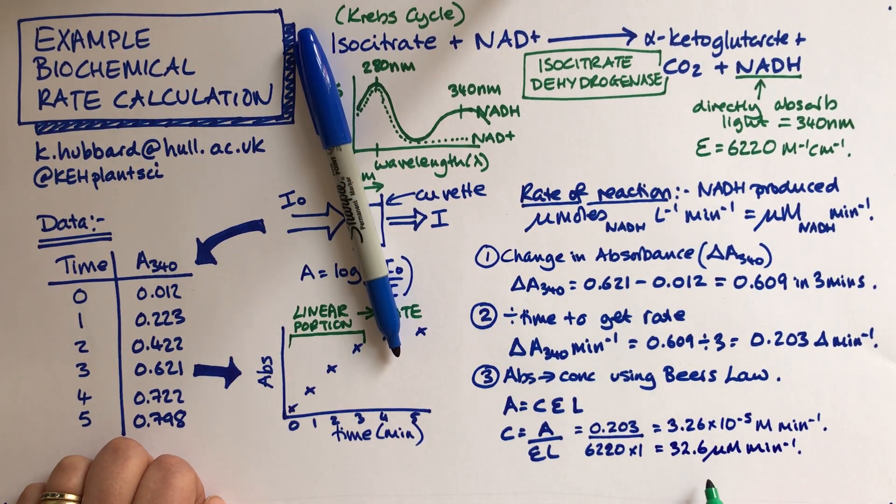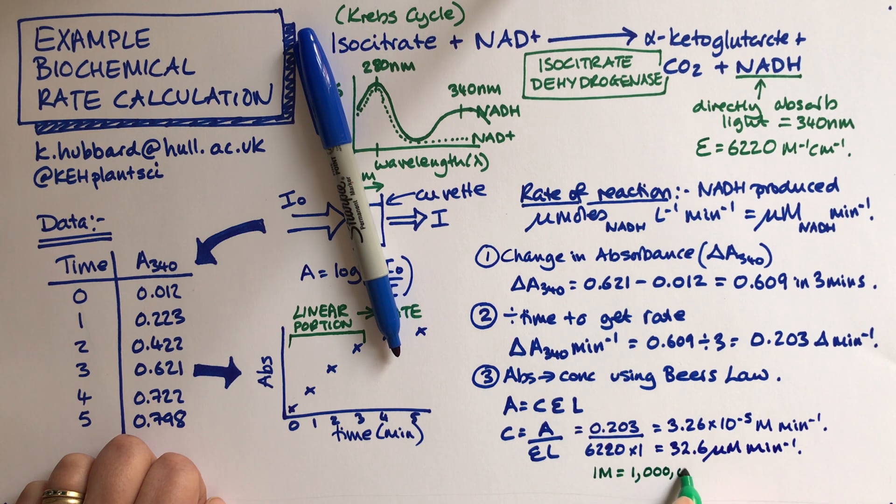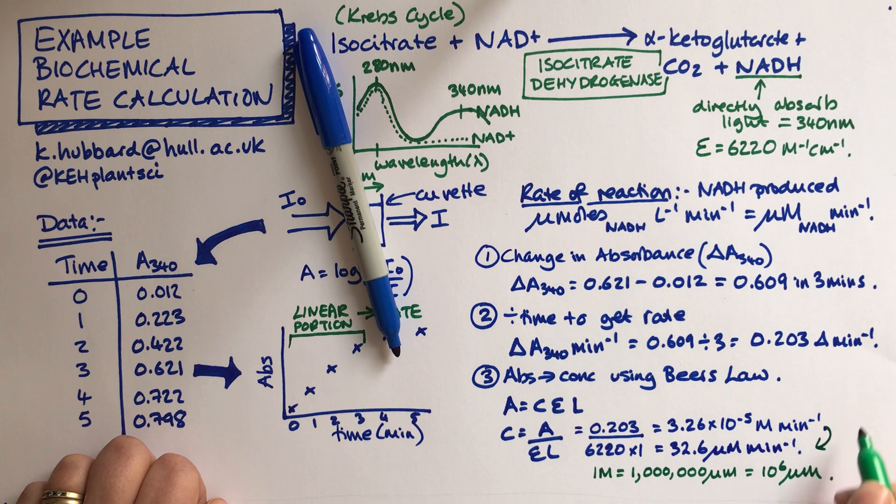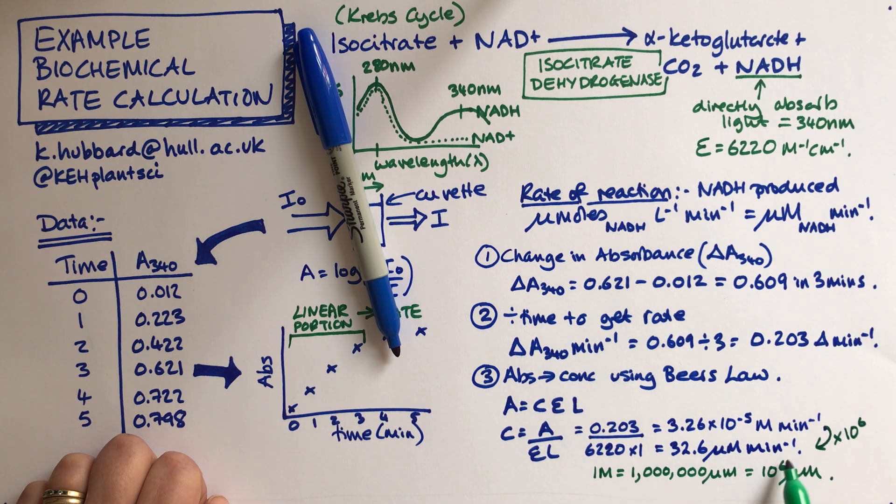Just to see where that's come from, 1 molar equals, because 1,000,000 micromolar is the same as 10 to the 6 micromolar. So what we've done is to get from that unit there to that unit there, we've times by 10 to the 6 in order to get it in micromolar.